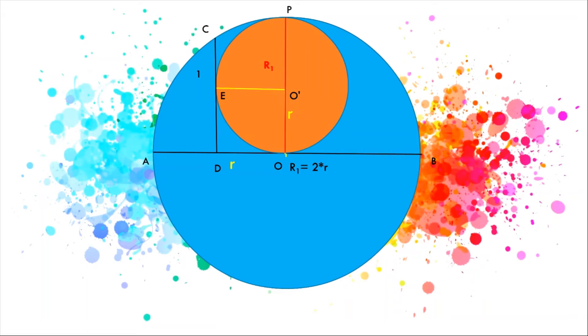From this construction, we can determine that OP, which is the radius of the larger blue circle, equals 2r.